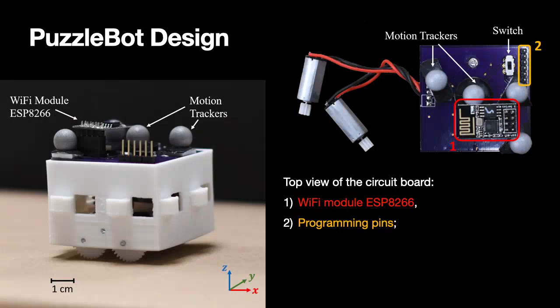On the right, you can see a top view of the circuit board. The red box here is the WiFi module. The WiFi module connects the robot to the same WiFi network as the VICON system and the central computer. The central computer will be able to communicate with the robot and send velocity commands for the robot to execute.